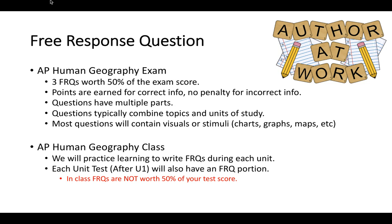Points on the exam are earned for correct information — there are no penalties for incorrect information. The questions usually have multiple parts, labeled A through G, though sometimes fewer. The questions typically combine multiple units of study and topics together to create a combined or conglomerate question, asking you about all of your knowledge across the discipline of human geography, not just one specific area or topic.